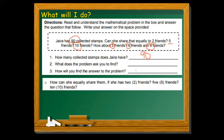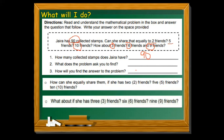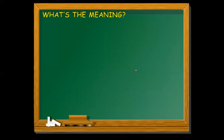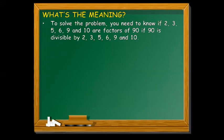How can she equally share them if she has 2 friends, 5 friends, 10 friends? And how about if she has 3 friends, 6 friends, or 9 friends? To solve the problem, you need to know if 2, 3, 5, 6, 9, and 10 are factors of 90 — that is, if 90 is divisible by 2, 3, 5, 6, 9, and 10.